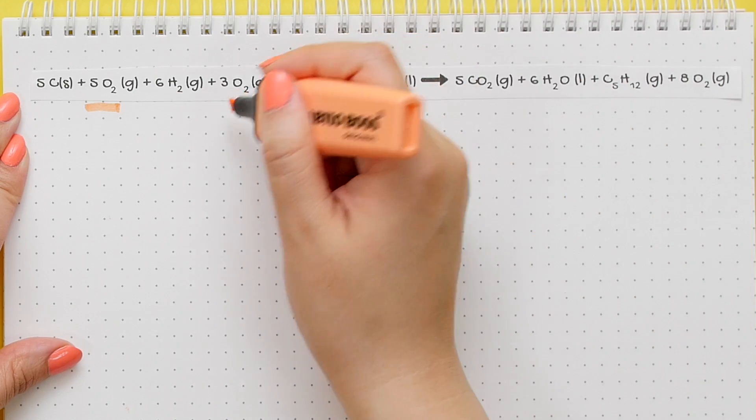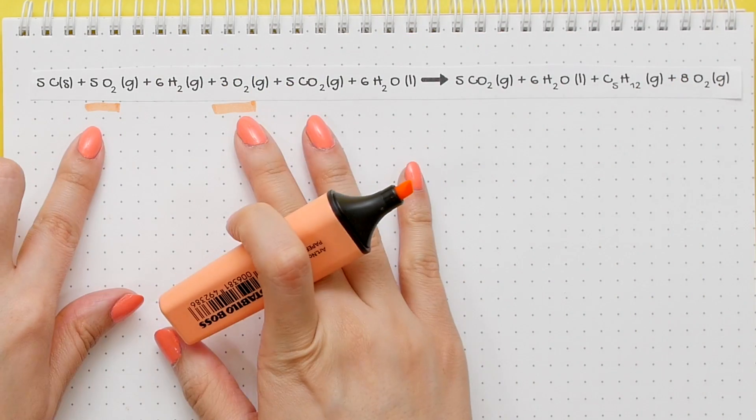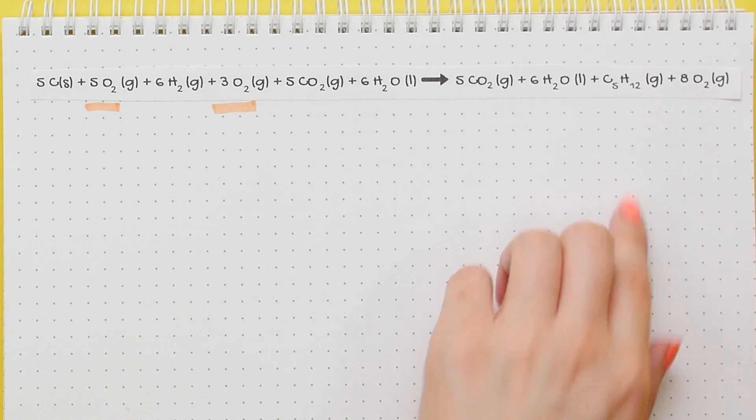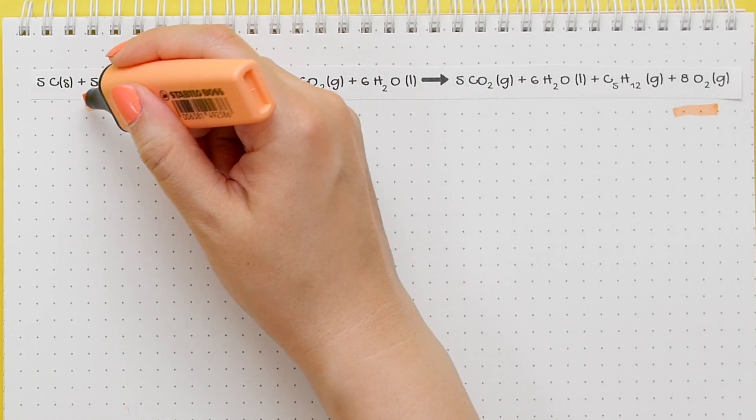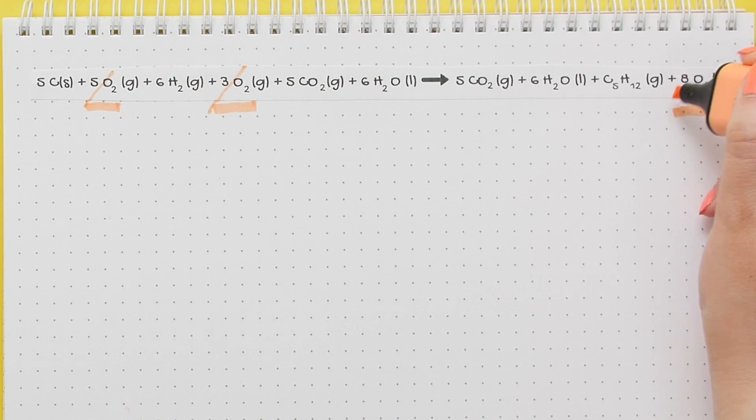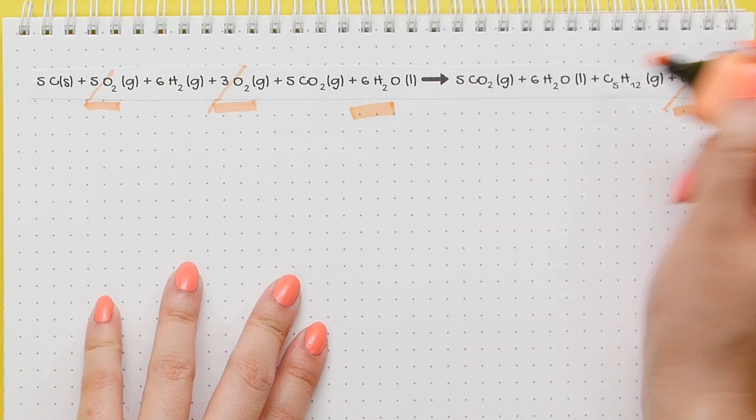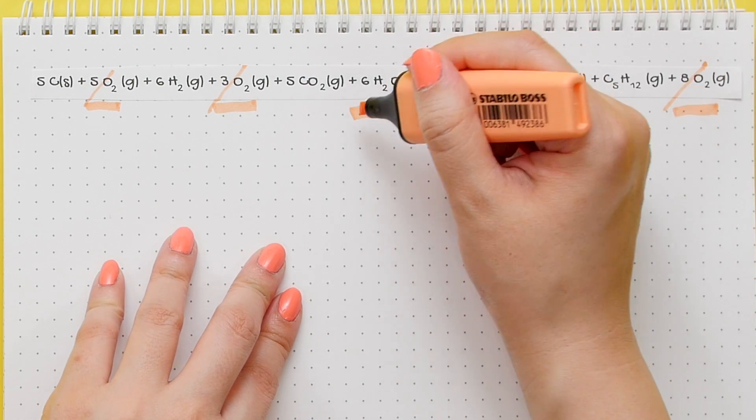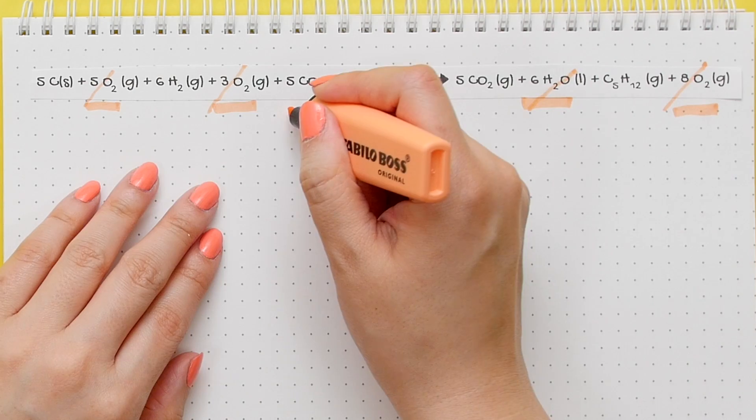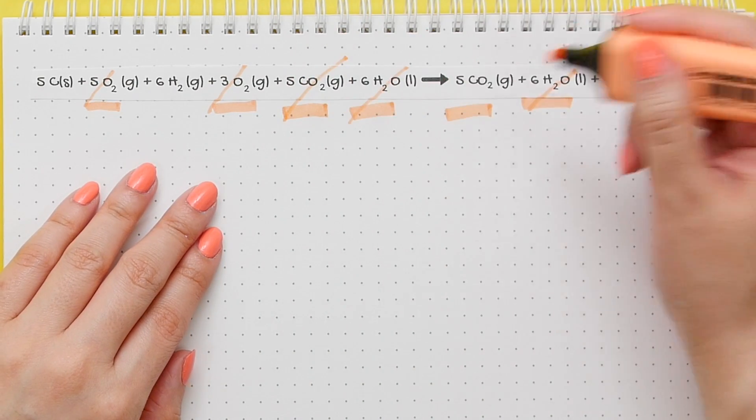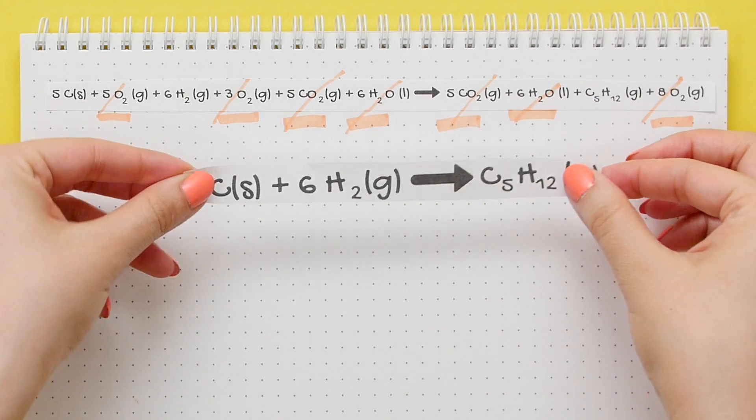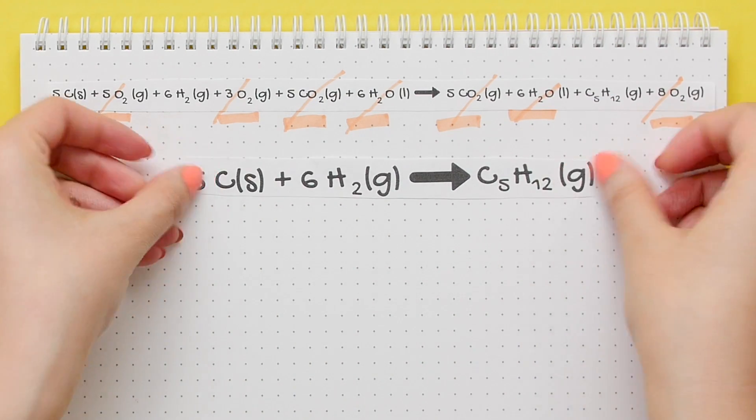Here we have five O2s and three O2s on the same side. So that really adds up to eight O2s that we have on the product side. So we'll cancel out all the O2s. We also have six H2Os on both sides, so we'll cancel that out. And there are five CO2s on either side. We can cancel those too. We will be left with the goal reaction, which is what we wanted all along.